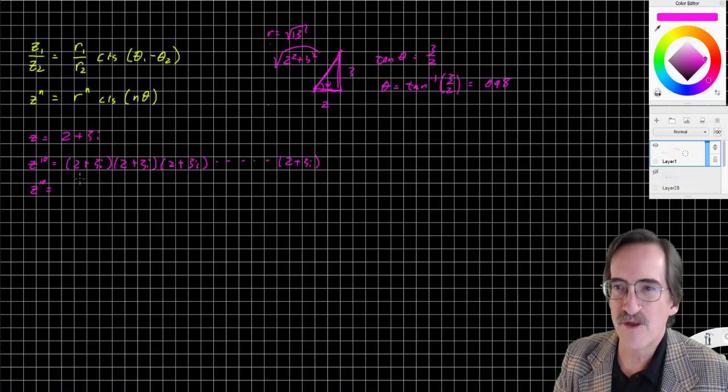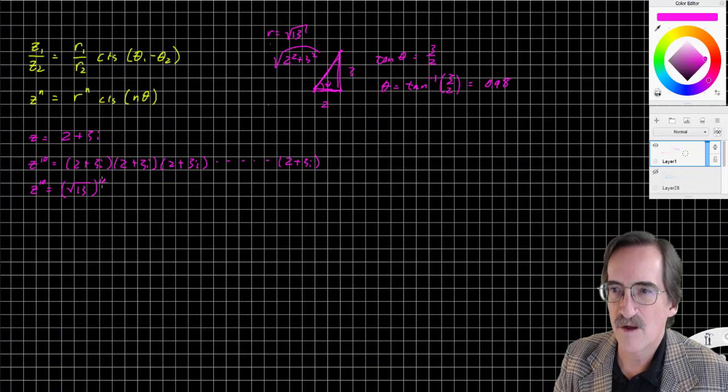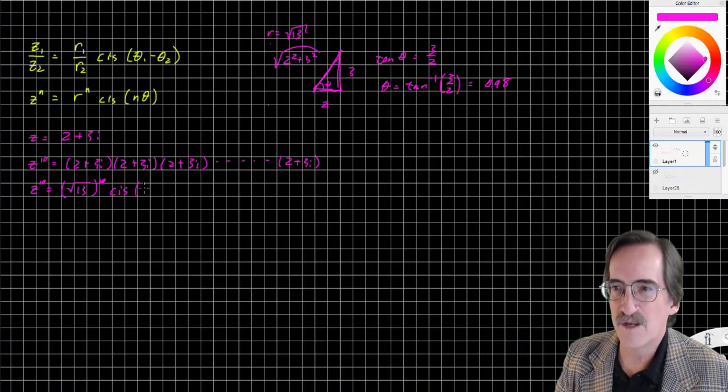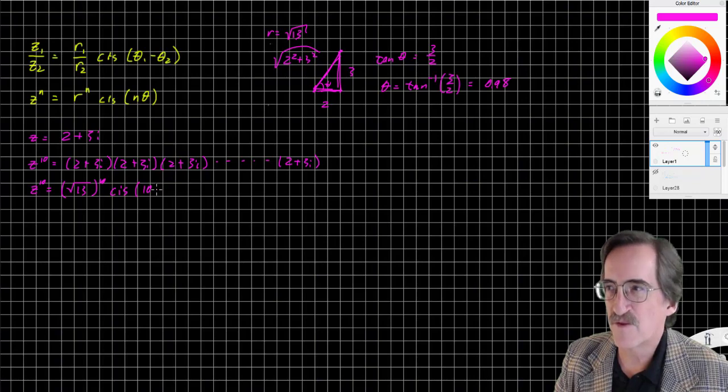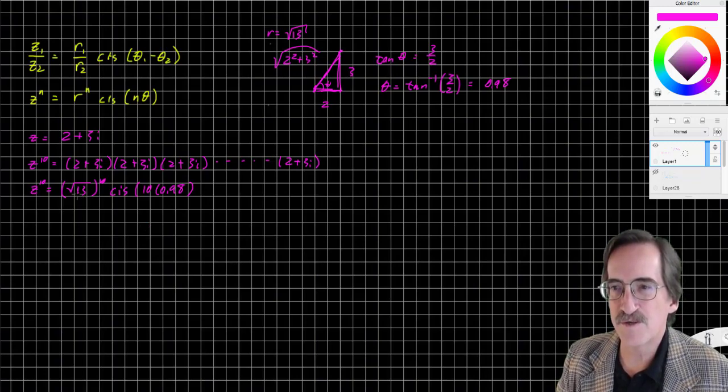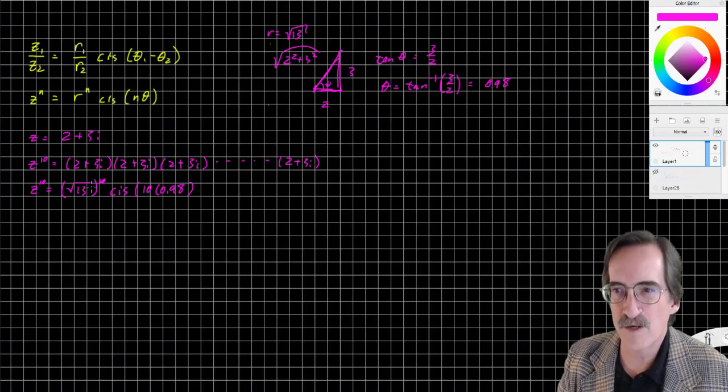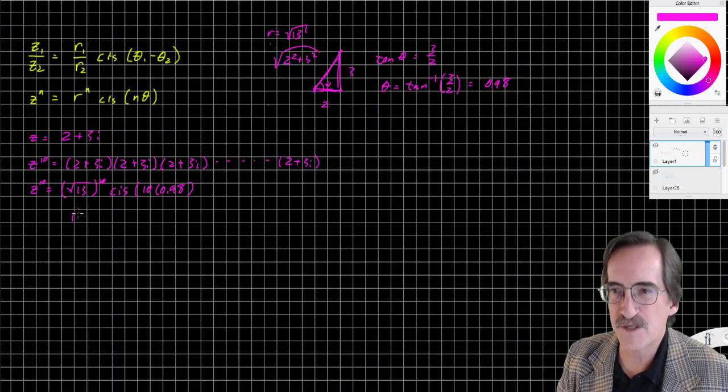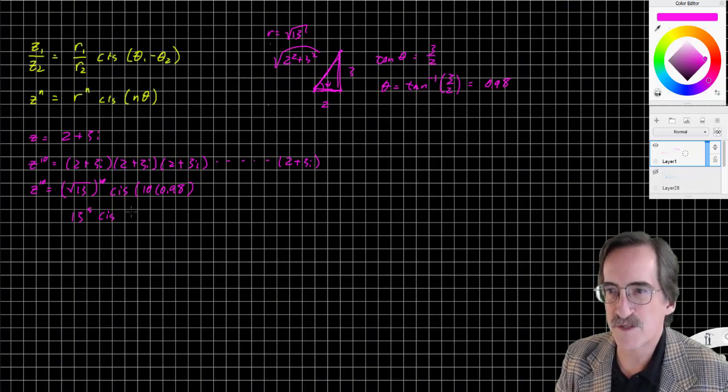So Z to the 10th then is R to the 10th. So root 13 to the 10th times cis of 10 theta, 10 times 0.98. And there we have it. Square root 13 squared is 13, so this is 13 to the 5th. Or you can think of it as 13 to the half to the 10th. Cis 9.8.